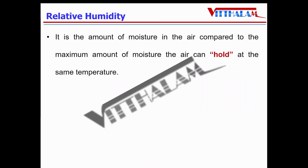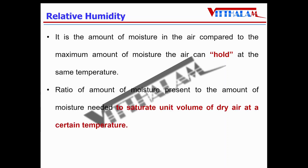Relative humidity is the amount of moisture in the air compared to the maximum amount of moisture the air can hold at a particular temperature. In other words, it is the ratio of the amount of moisture present to the amount of moisture needed to saturate a unit volume of dry air at a particular temperature. This ratio is expressed as a percentage.